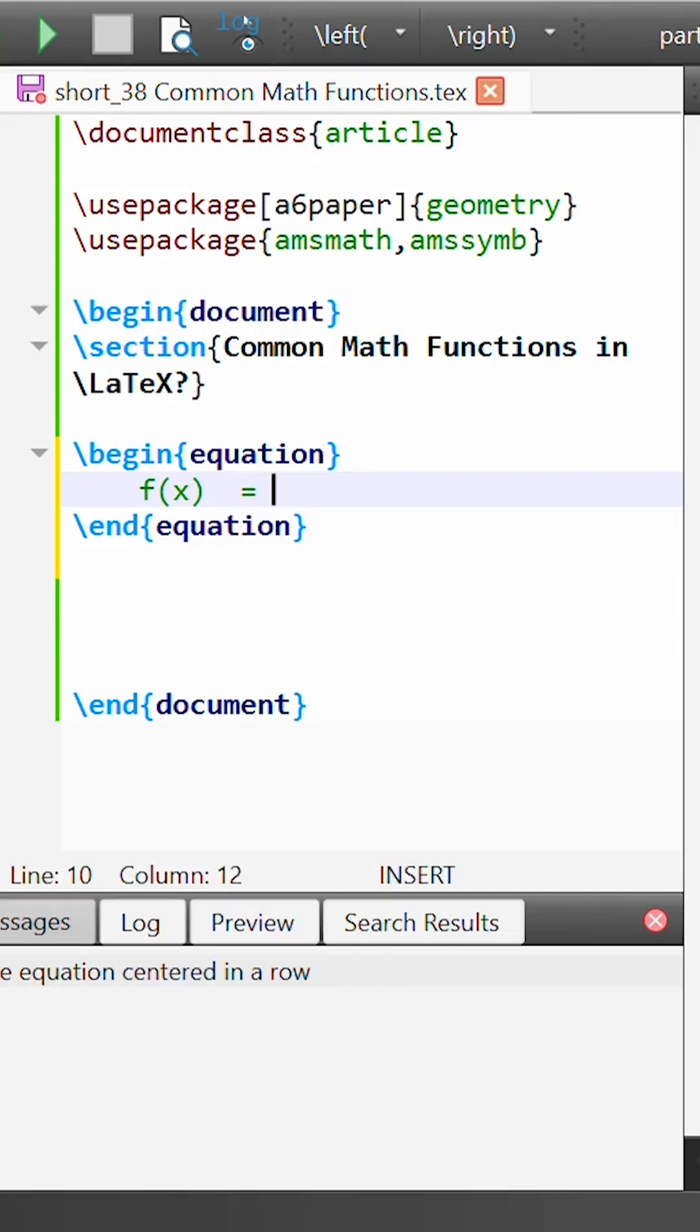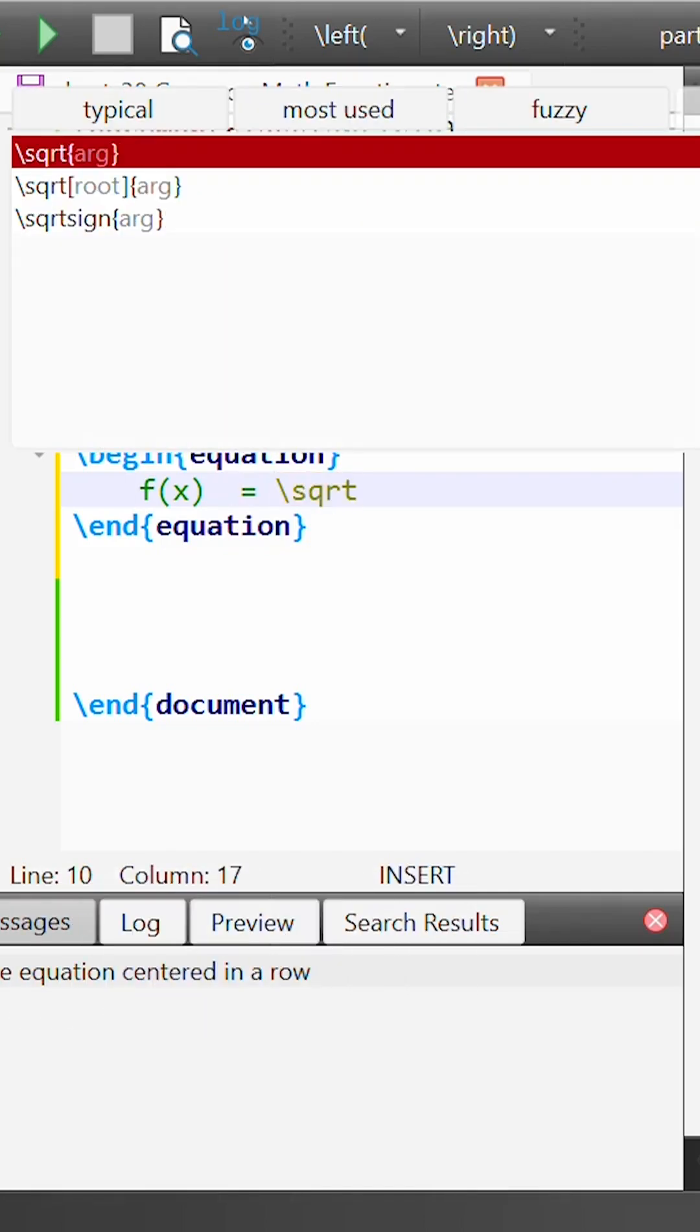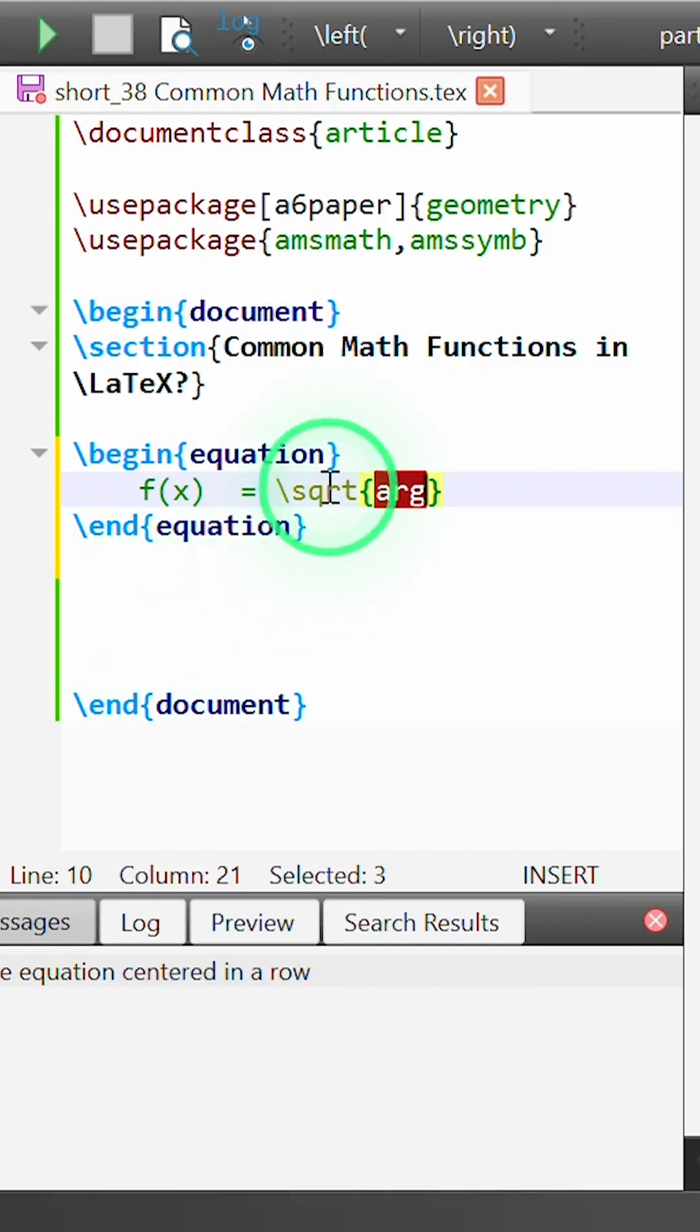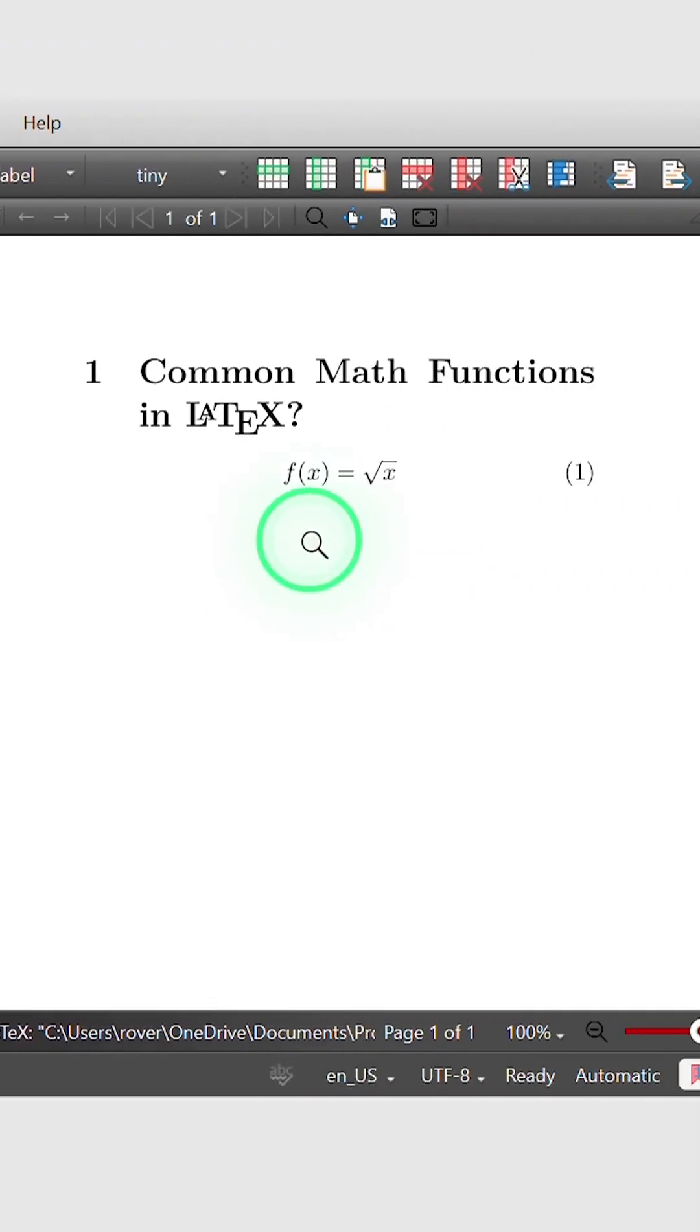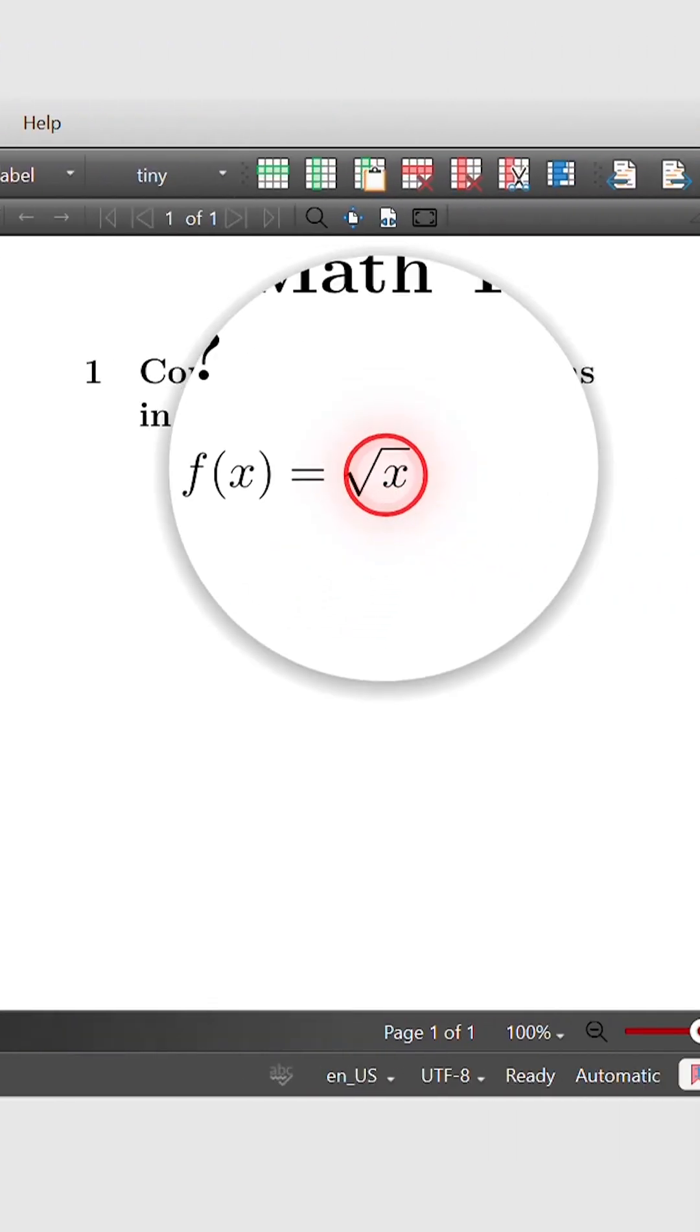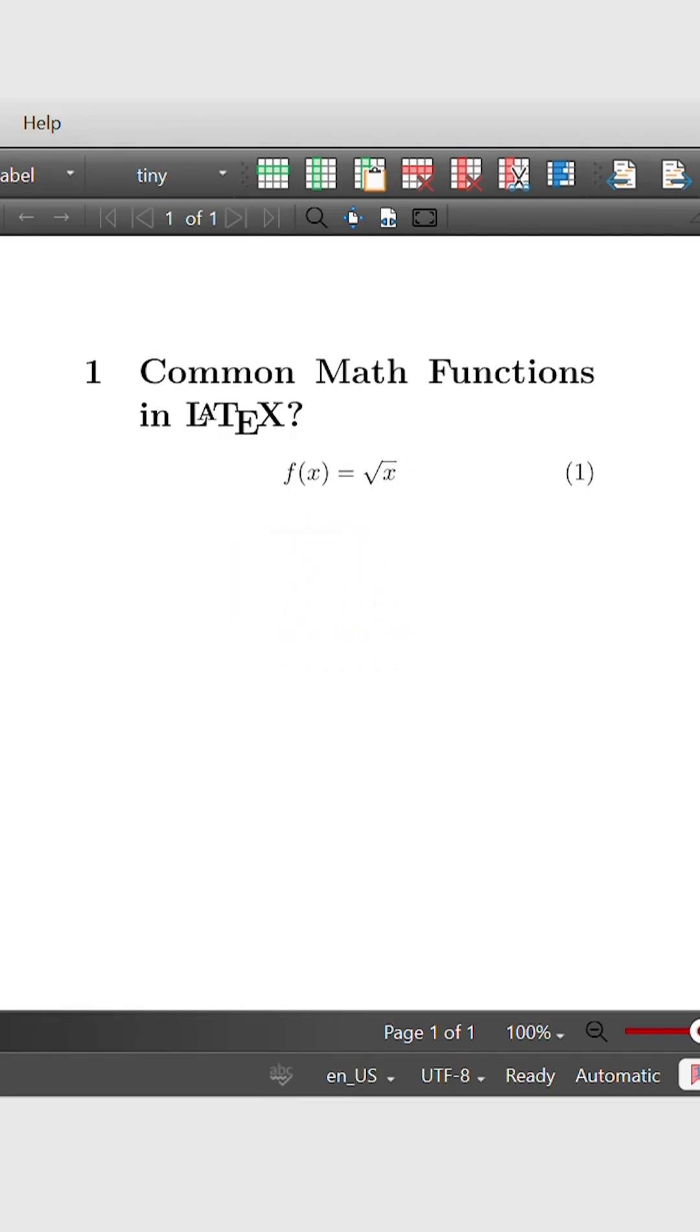Let's say f of x is equal to a square root. In this case I can use the command \sqrt, and then the expression I want to be square rooted, such as just a term x, passes as an argument to this command. If I build this, you'll see that we get f of x equals the square root of x in our output.